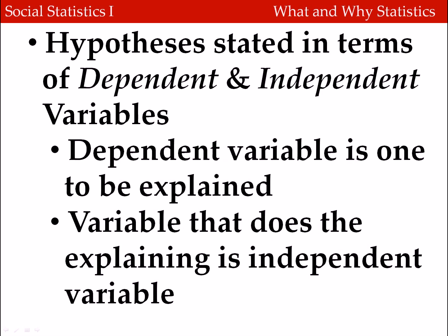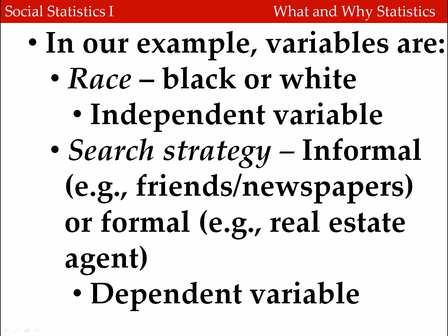We typically state hypotheses in terms of independent and dependent variables. The dependent variable is the variable being explained by our analysis, and the independent variable is the one doing the explaining. In our example, we had two variables: race, which can take on values of black or white — that's the independent variable — and search strategy, which is the dependent variable. Search strategies are defined as either informal, for example using friends or newspapers, or formal, like a real estate agent or broker.